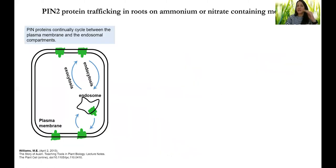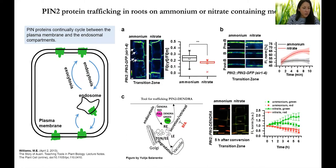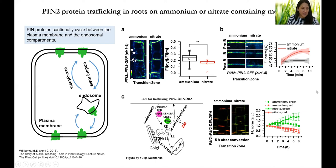Next we checked PIN2 protein trafficking in roots on ammonium or nitrate-containing media. PIN2 proteins constantly cycle between the plasma membrane and endosomal compartments, so their abundance at the plasma membrane is largely dependent on a balance between endo- and exocytosis. Putting together results from three different approaches, we clearly saw that PIN2 subcellular trafficking — in particular, the delivery of PIN2 to the plasma membrane — is differently adjusted to the nitrogen source. In nitrate-supplied roots, trafficking of PIN2 to the plasma membrane and to the lateral domains is more promoted compared to ammonium-supplemented roots.